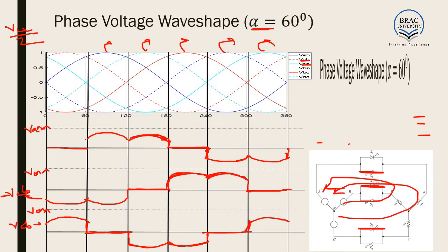So we can see this is the resulting graph. It is very noticeable that the output here is AC, because for a single cycle this side is positive and this side is negative, and the positive is equal to the negative. Similarly, VCN has two positive parts and two negative parts in a single cycle. In each and every case, the average voltage is 0. Here the input is three-phase AC and the output is also AC.